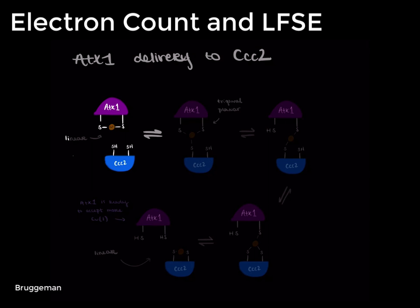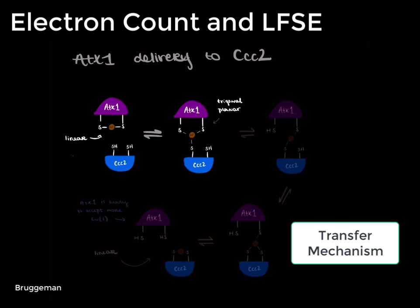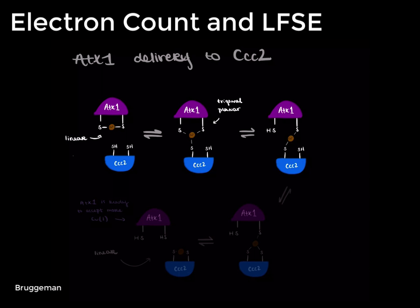The zero ligand field stabilization energy of copper 1 also assists in the transfer mechanism from the copper chaperone to another protein, such as CCC2. During the docking and transfer process to CCC2, copper forms an additional bond with an adjacent cysteine residue of the CCC2 protein before breaking any initial bonds with ATX1.